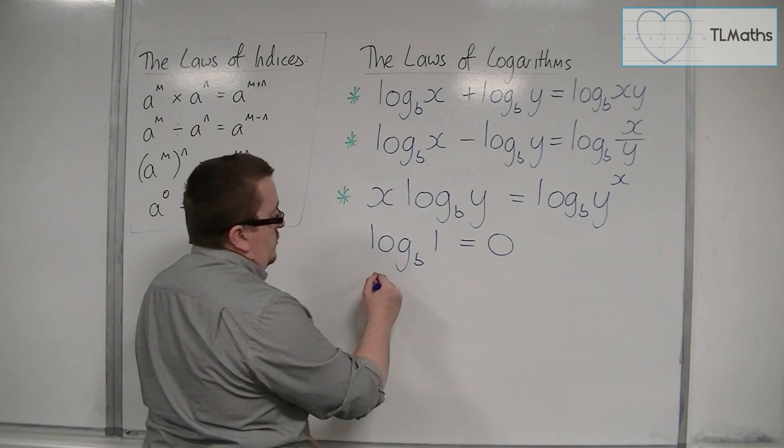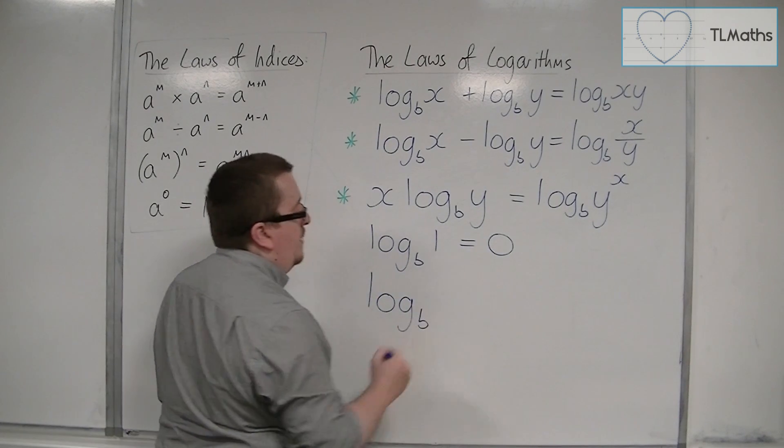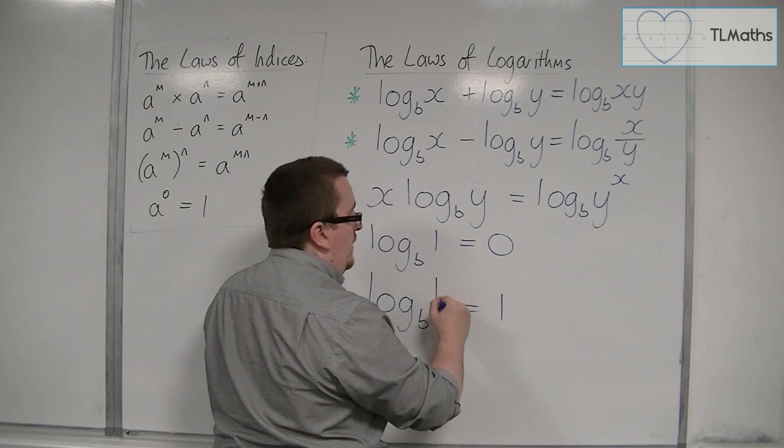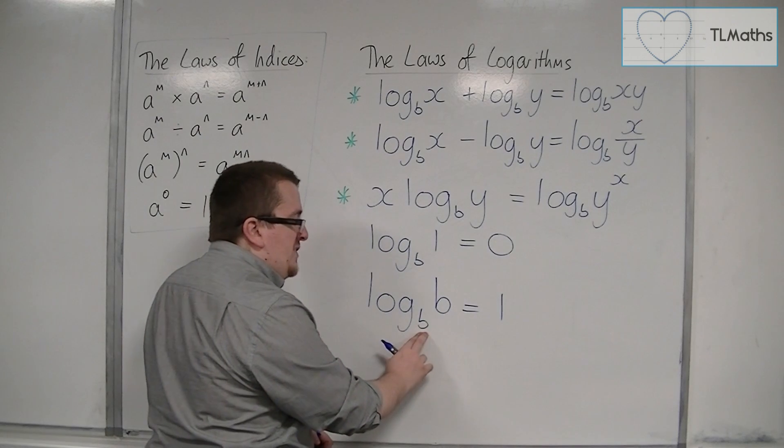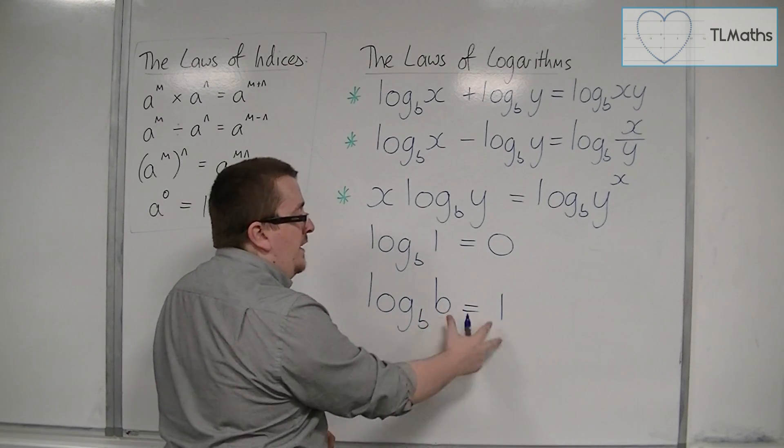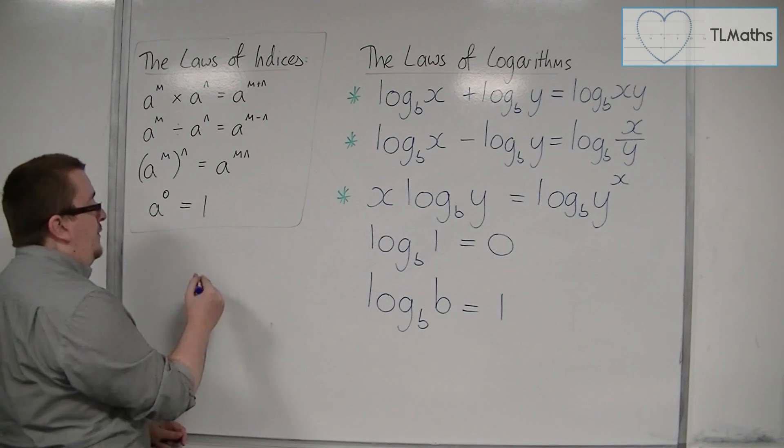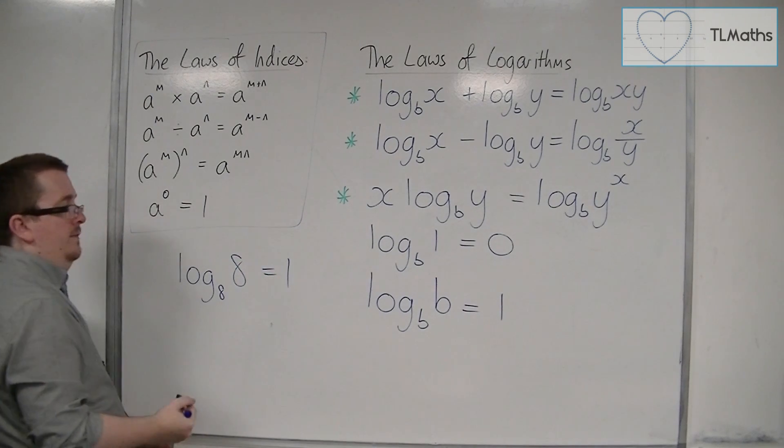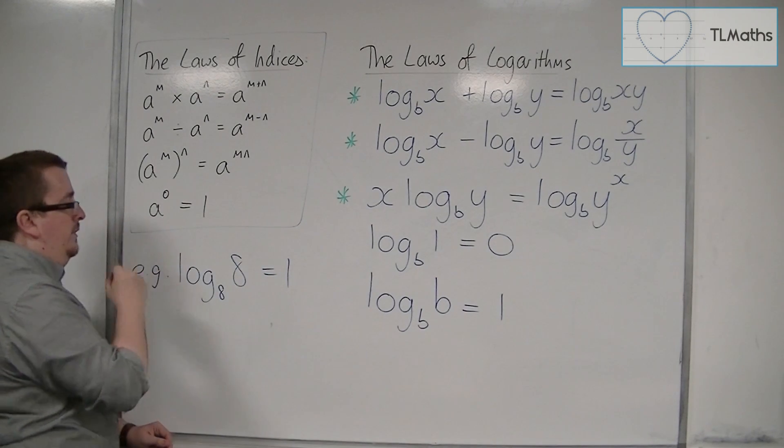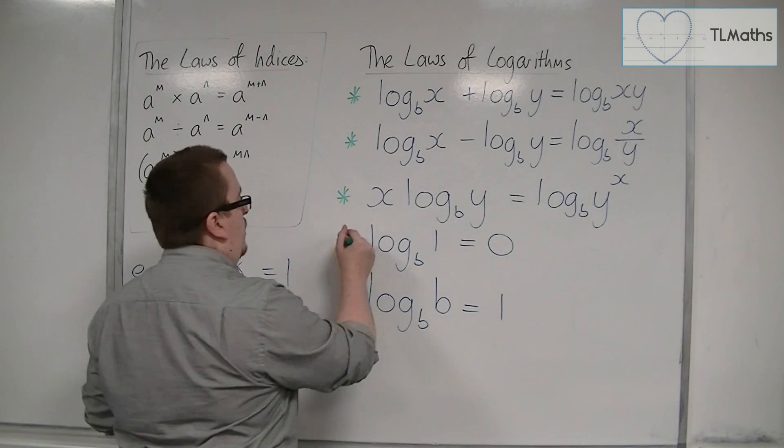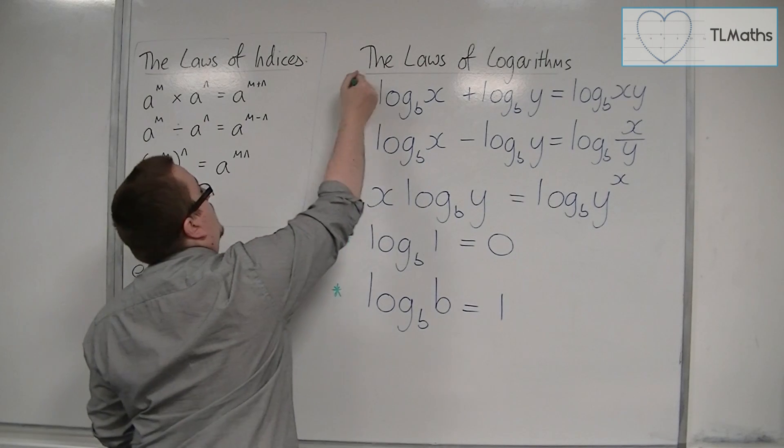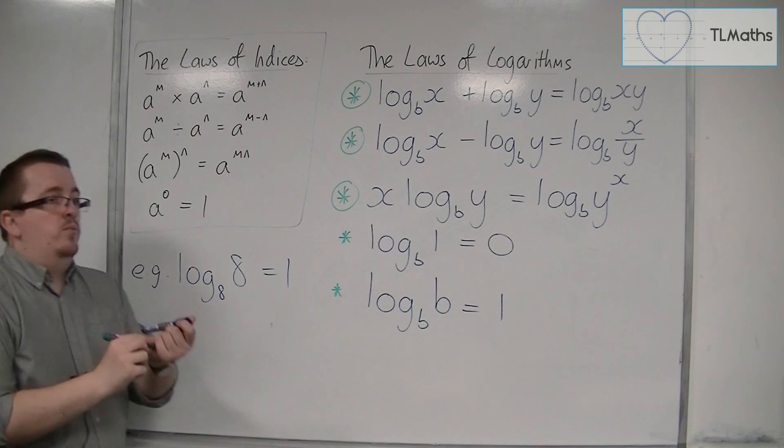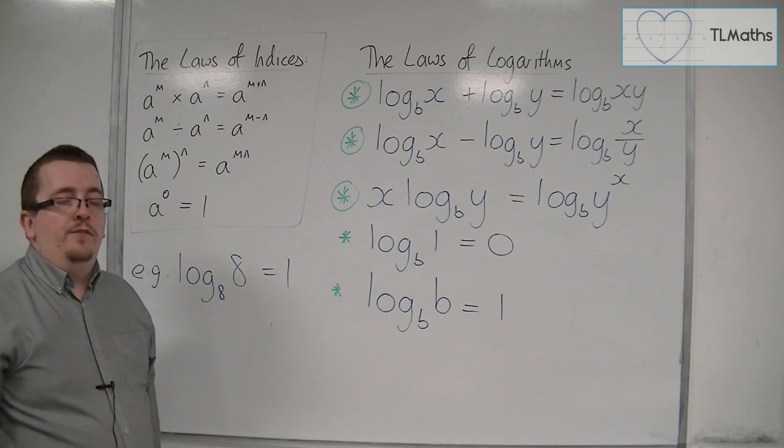It also stands to reason that log base b of b equals 1. If the base number and the argument are the same, this will always be 1. For example, log 8 of 8 will be 1. These two facts are very important to remember, but it is these three laws of logarithms that we are going to be practicing in the next few videos.